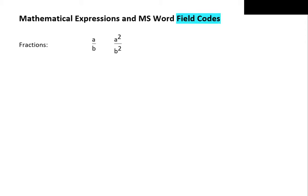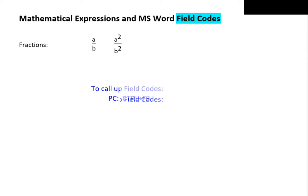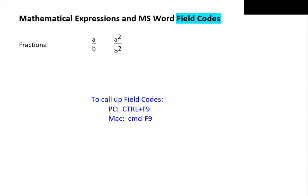To create these expressions, we use what is called a field code. We start a field code by pressing special keys. On a PC, we press Ctrl+F9. The equivalent keys on a Mac are Command+F9. By pressing these keys, we call up the field code brackets. These brackets aren't the same brackets we get by pressing the actual bracket keys on the keyboard — these are special brackets.